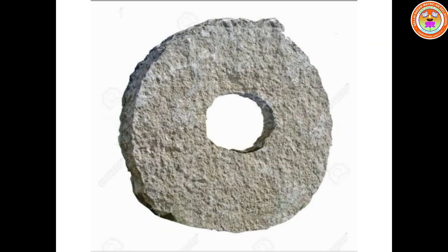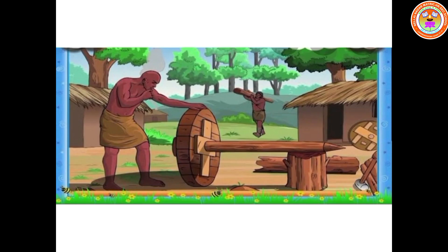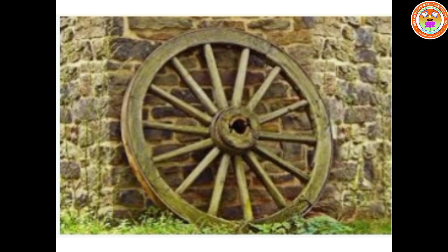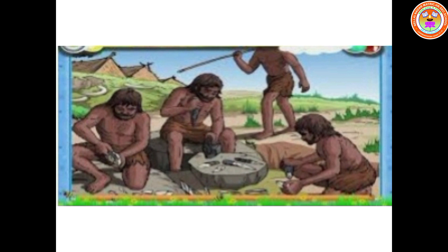Next, we have the invention of wheel. Early humans walked on foot to faraway places and carried goods, as there was no transport system. Later, when humans saw stones rolling down from the mountains, they got the idea of making a wheel. The first wheel was made out of stone. Then they connected the wheel with a cart and used it to carry goods to faraway places. In the early iron age, they discovered the iron wheel because the wooden wheel broke easily. The wheel is the first scientific invention of early humans.